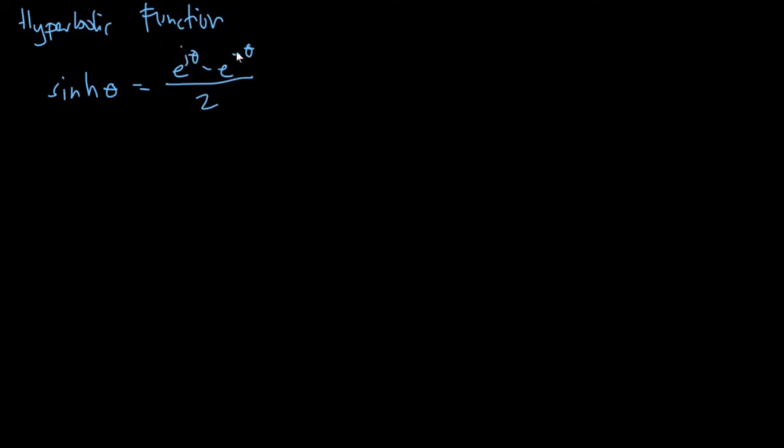So this is like sine theta but without the j here. And we have the hyperbolic cosine theta is equal to e j theta plus e negative j theta over 2. So the same with cosine theta.